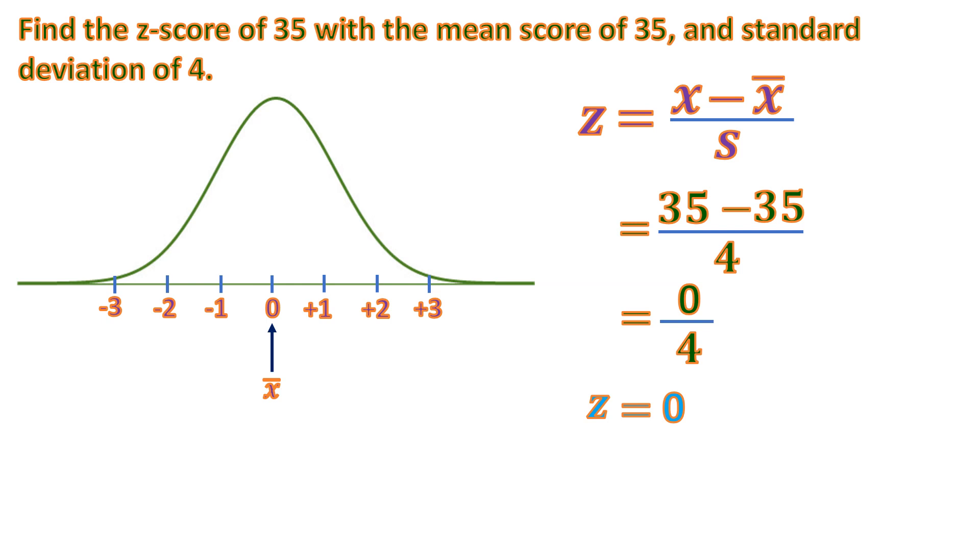So for a normal curve problem, if the given x is also the mean score, automatic the z-score of it or the standard score is always 0. And that is how you solve a z-score of a normal distribution.